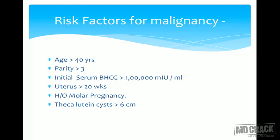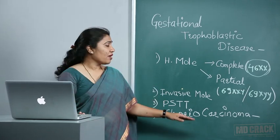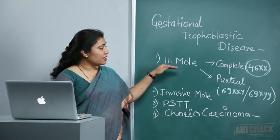Risk factors for subsequent malignancy (choriocarcinoma) include: age more than 40 years, high parity (more than 3 children), initial serum beta-HCG levels more than 1 lakh mIU/mL, uterine size of 20 weeks or more, prior history of molar pregnancy (recurrence), and bilateral theca lutein cysts more than 6 cm. These factors indicate high risk and require careful management and monitoring.